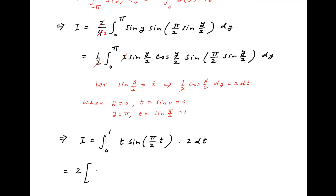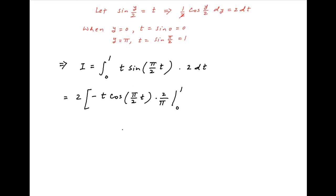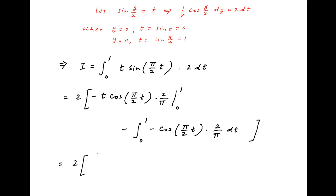Integrating by parts, this equals 2 times: t times the integral of sin(πt/2), which is minus cos(πt/2) times 2/π, evaluated from 0 to 1, minus the integral from 0 to 1 of minus cos(πt/2) times 2/π times the derivative of t, which is 1, dt. Putting in the limits gives 2 times: minus cos(π/2) times 2/π plus (2/π) times the integral from 0 to 1 of cos(πt/2) dt.